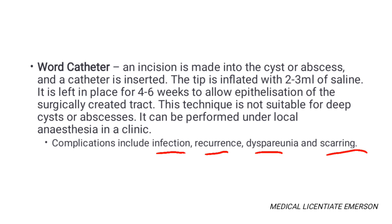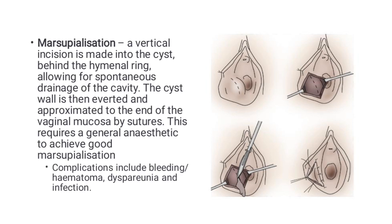For marsupialization, a vertical incision is made into the cyst behind the hymen, allowing for spontaneous drainage of the cavity. The cyst wall is then everted and approximated to the edge of the vaginal mucosa by sutures.